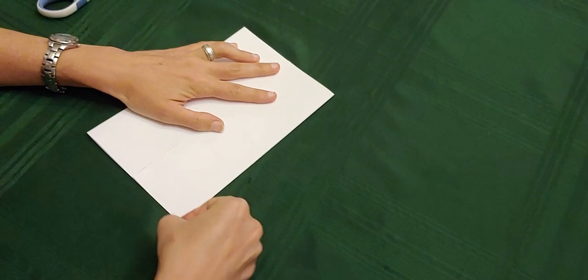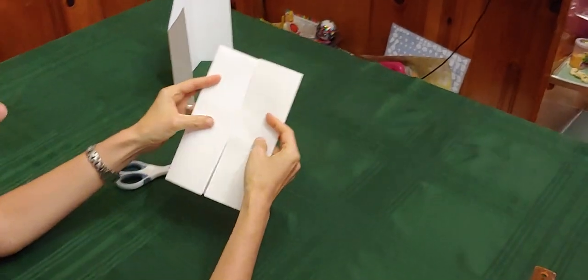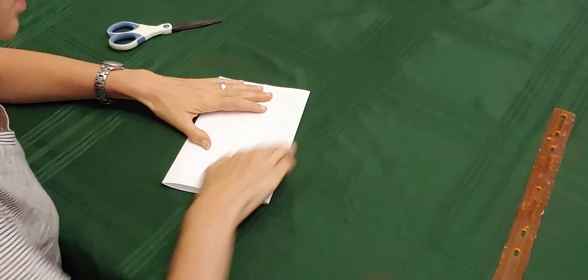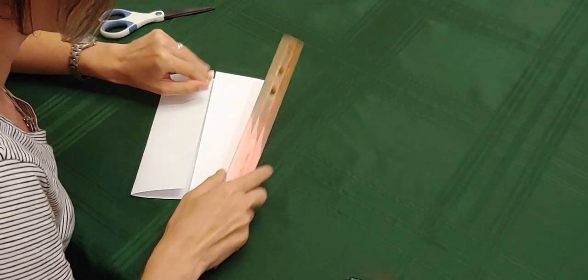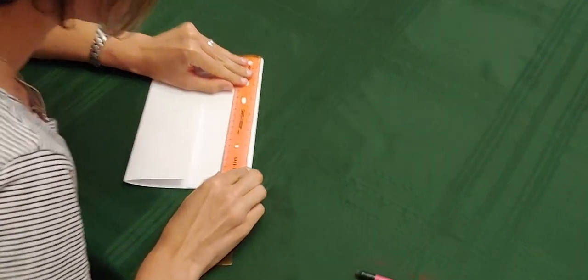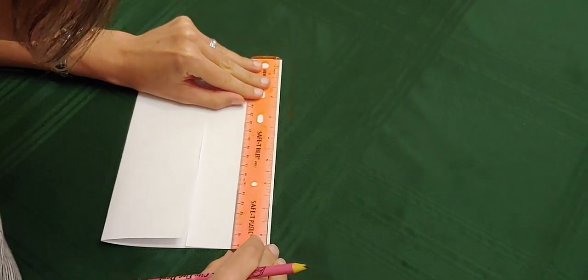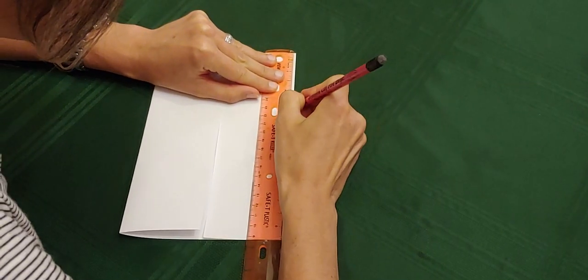So now you have a little envelope type thing, and this is fine and dandy, but we want to give it a little bit more flair. So what I'm going to do is measure down from the top three inches. It can be any amount that you want. I'm just choosing three inches because it's a nice even number.